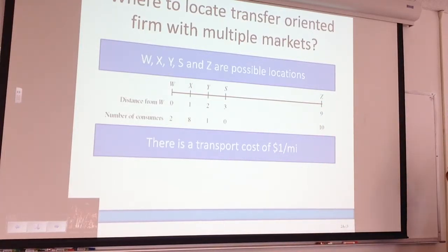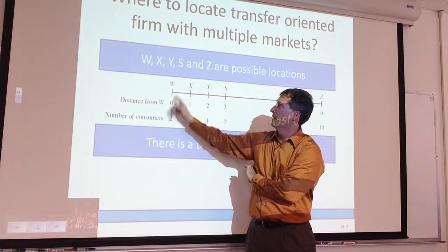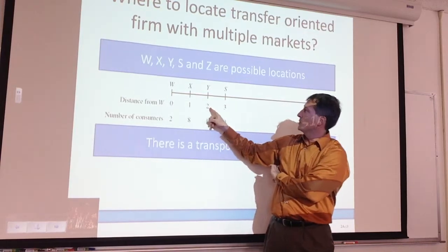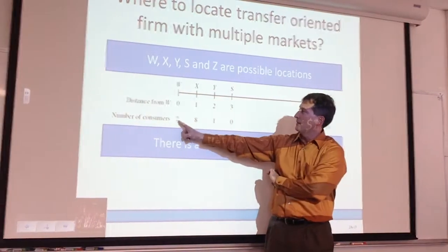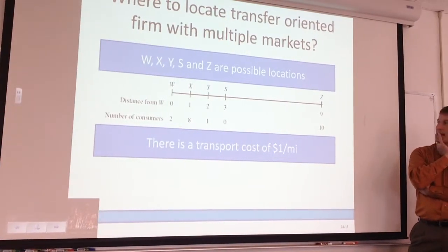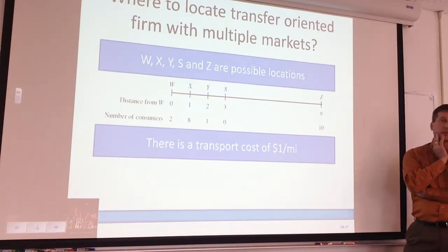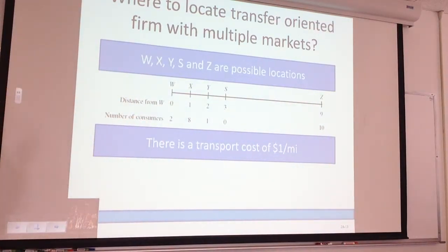Suppose W, X, Y, S, and Z are all possible physical locations. Here's location W — we're just using that as a reference point. One mile away, two miles away, three miles away, nine miles away. At each location, these are the number of customers. It costs you a dollar per mile to move that final product — so maybe you're delivering pizzas or something. You've got the opportunity to locate your business somewhere. Given this information, where's the best location? You've got to pick W, X, Y, S, or Z.